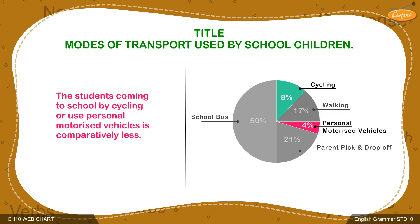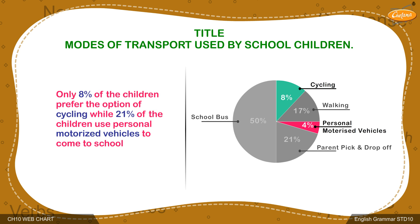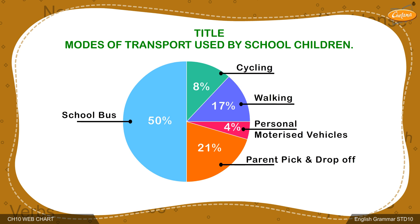Now let's consider the remaining two percentages, that is 8% and 4%. These are the lowest percentages given in the diagram. Thus, we can use words such as lowest, least, or less in a paragraph. We say: students coming to school by cycle or personal motorized vehicles is comparatively less. Only 8% of children prefer the option of cycling while 4% of children use personal motorized vehicles to come to school. We have now incorporated all the points given in the diagram, and our paragraph is complete.